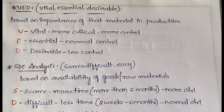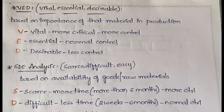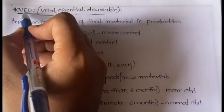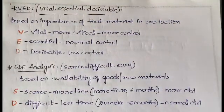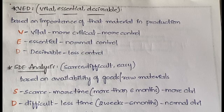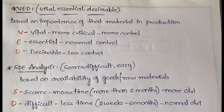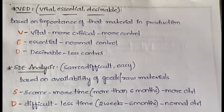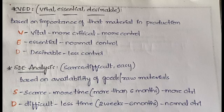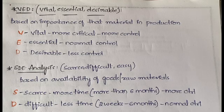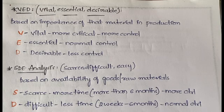We have two more techniques: VED and SDE. VED stands for Vital, Essential, and Desirable. These are categorized based on the importance of the material in the production process. When manufacturing a product, some raw materials are more critical than others. FSN is based on frequency of usage, HML is based on cost per unit, and VED is based on importance in production.